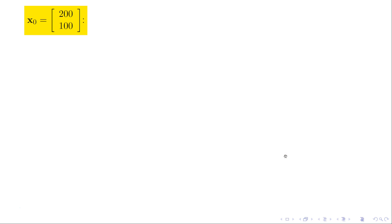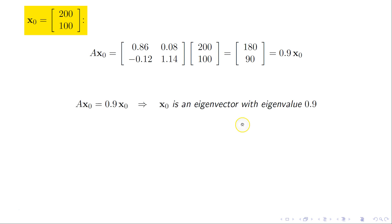Meanwhile, I have another choice here of initial populations, 200 and 100. Now I have to say these were in advance chosen very particularly to work out nicely. That population also is, that state I should say, is also an eigenvector. If I multiply it on the left by A, I get 0.9 times x0.